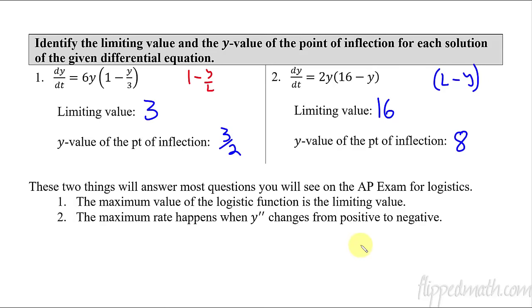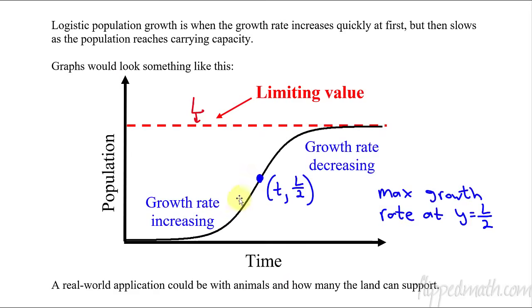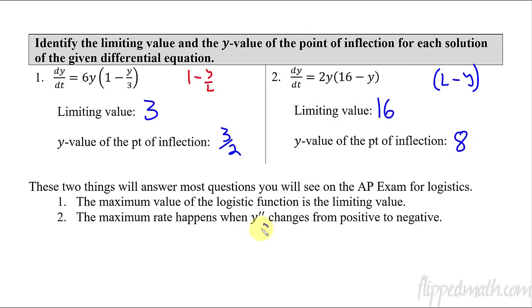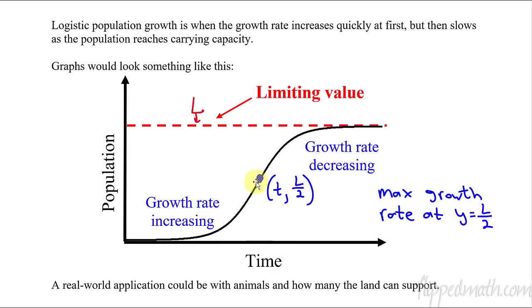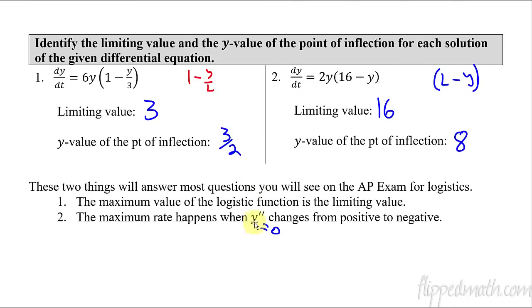Now, these are the two things that are going to answer most questions on the AP exam that deal with logistic functions. If it asks you for a maximum value, so maximum value of the logistic function, that's talking about the L. That is the L portion. It's the highest y value that the function is going to get to. And then if it asks for the maximum rate, that is the point of inflection, the y value of the point of inflection, or in other words, when y double prime changes from positive to negative. Because if you're changing from positive, it's concave up, and then it jumps to concave down. And so we could also just say, well, this is when that equals zero and solve. If it's a free response problem, you're going to want to have to show your work. If it's a multiple choice problem, you know that that's going to happen halfway up to L. So it's actually a pretty quick and easy problem. But again, if you're a free response, you would want to prove it.